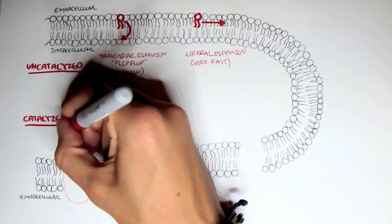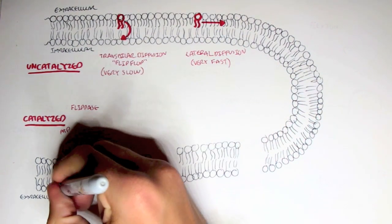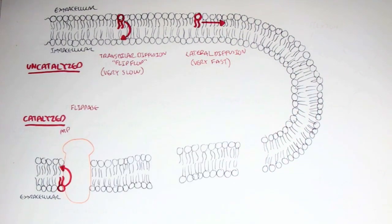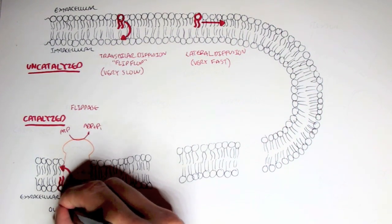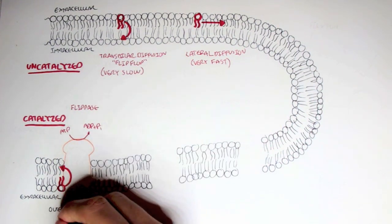The enzyme flipase, which is the process also called flipase, requires ATP. And essentially moves a lipid on the outer leaflet to the inner leaflet. So outer to inner leaflet. And as mentioned, it requires ATP.